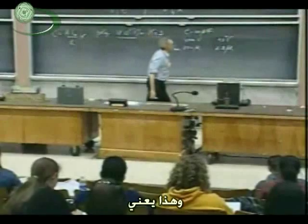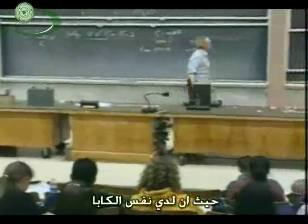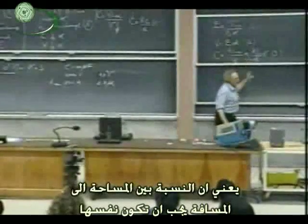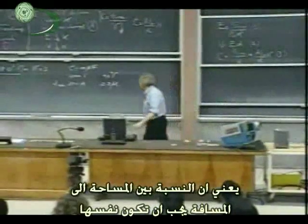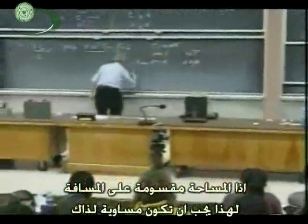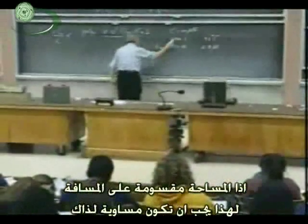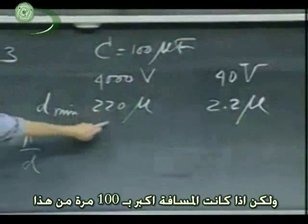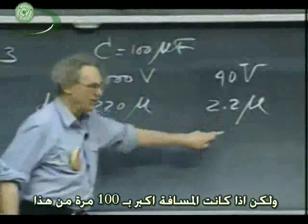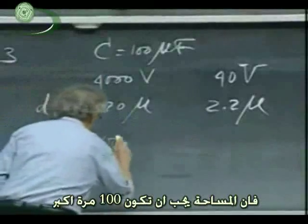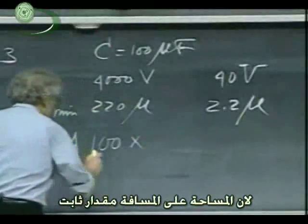That means, since they have the same kappa and the same epsilon zero, A over D has to be the same for both capacitors. So A divided by D for this one must be the same as A divided by D for that one. But if D here is 100 times larger than this one, then this A must also be 100 times larger, because A over D is constant.